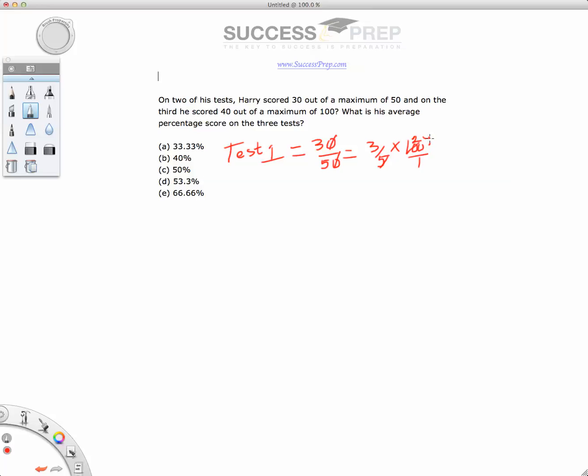And that 20 pretty much multiplies with the three over there, giving you 60. And that is going to be 60%. The next thing you do is you look at test two.